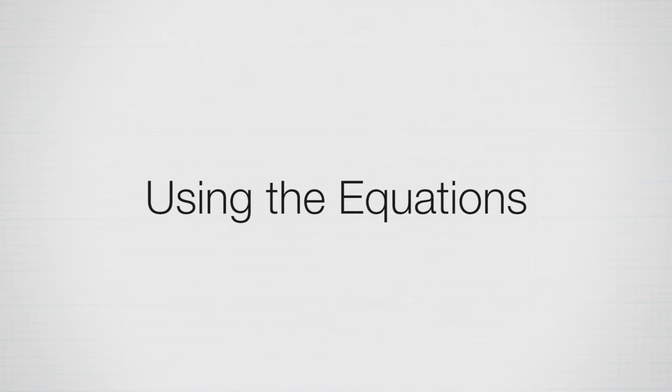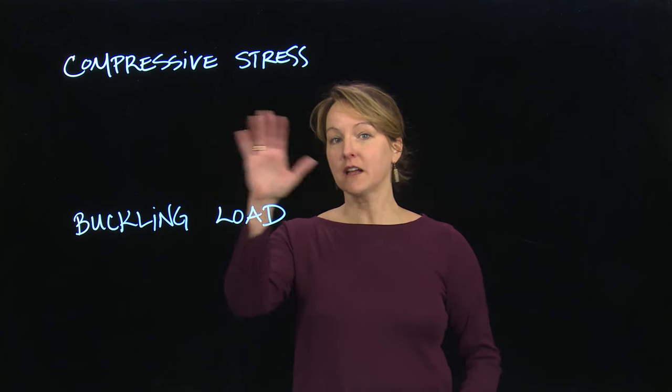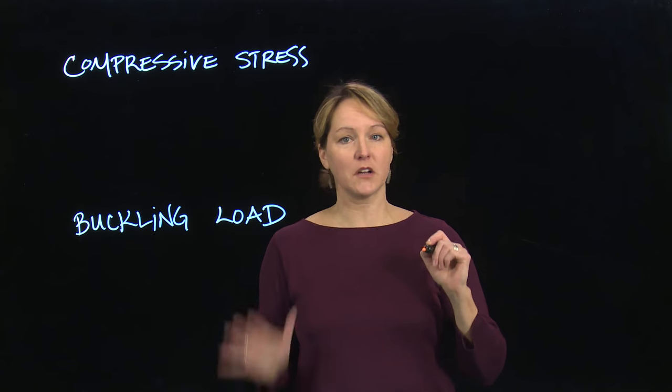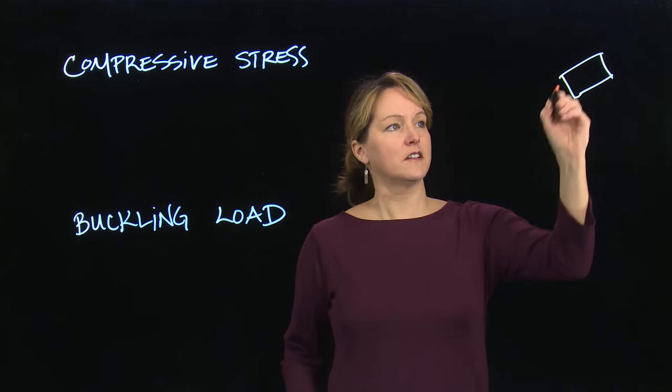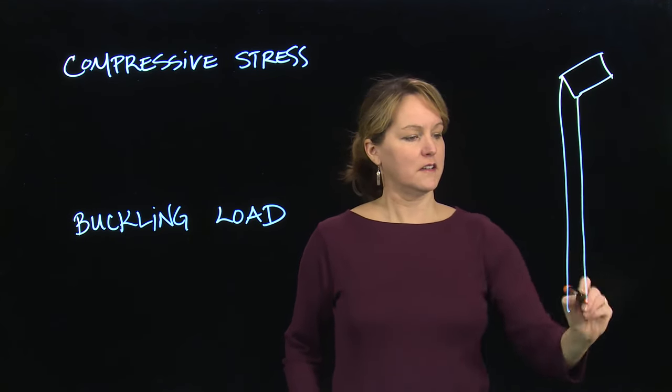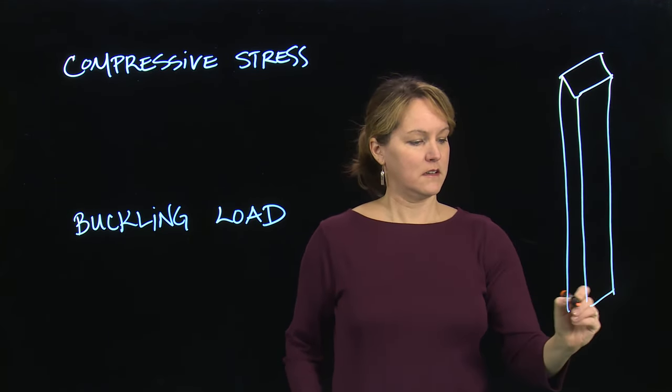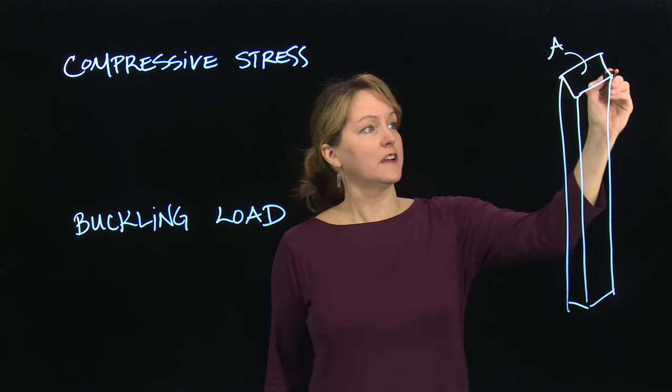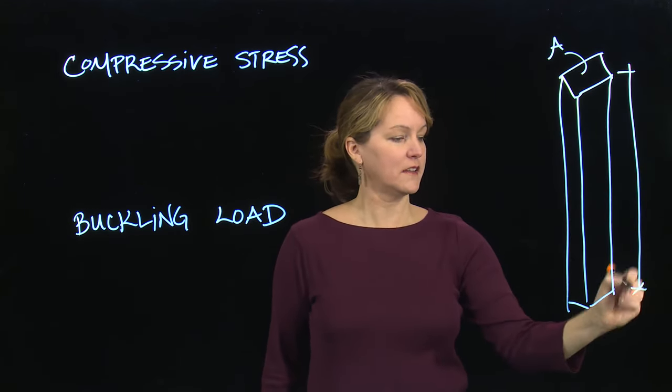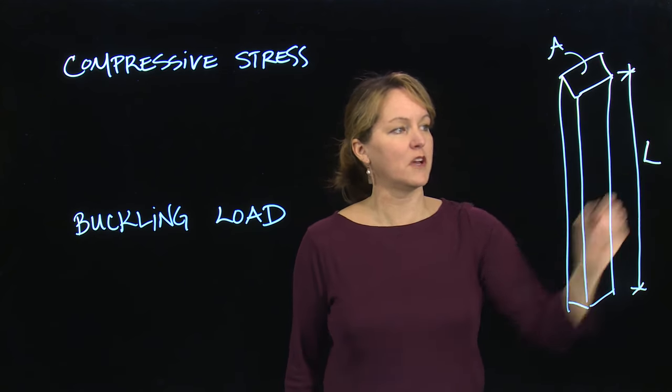So when we look at a column, there's two main things we look at. We look at compressive stress and buckling load. And we're going to go over the equations that go along with those. We'll just draw a simple column here with a rectangular cross-section. So that's the cross-section. I'll give it some height. So this is my column. This would be my cross-sectional area, and it will have a certain height or length. I usually use length for the column and call that L.